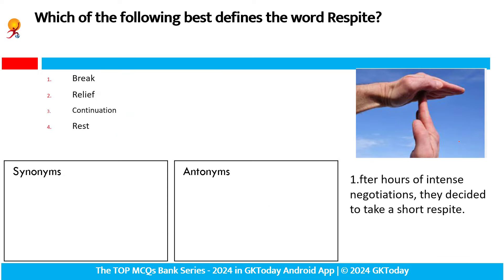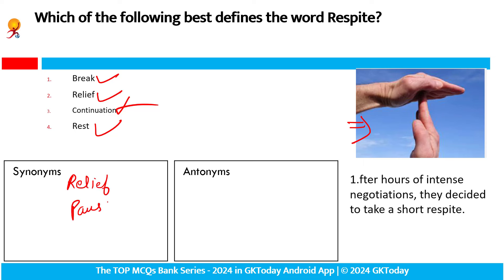Which of the following best defines the word 'respite'? Respite — in this picture you can see — respite means break. Break sign is this, respite sign — break, leave, rest. This is the synonym. When continuation is the antonym. Relief — synonym is this — relief, pause, call, intermission, break, rest.